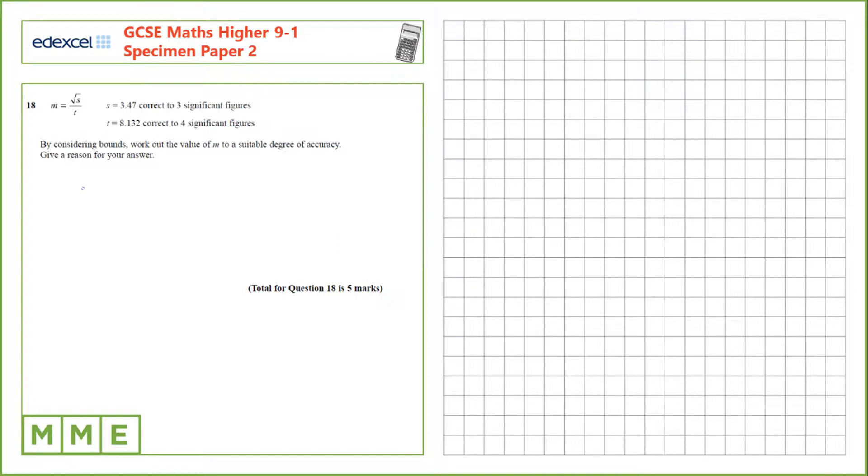If you want to work out the value of m, we're going to need to know the upper and lower bounds of it. So, in order to know those, we need to know the bounds of these in order to calculate m.